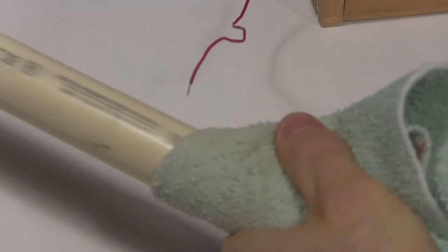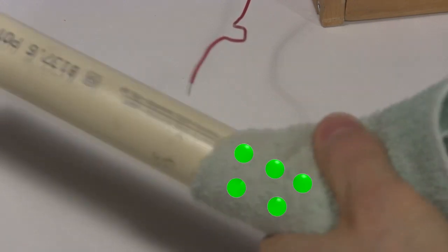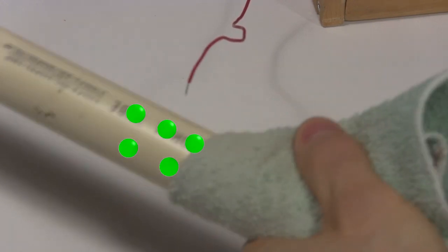The idea is that when you rub the cloth against the pipe, the pipe gets charged. Then, when the now charged section of pipe is out here, it gives up its charge to the sharp point of the wire.